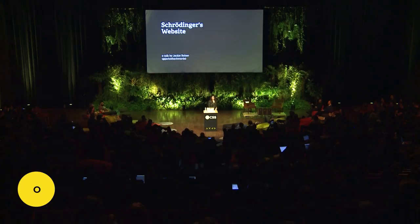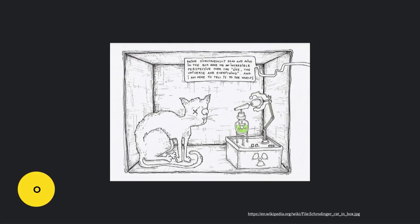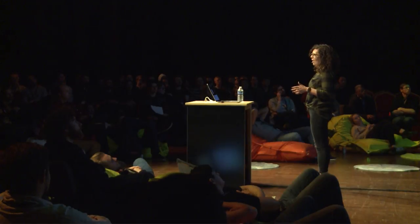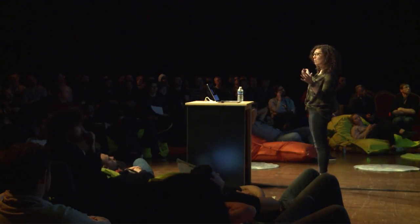Today I'm going to be talking about Schrödinger's website. If you're not familiar with the concept of Schrödinger's cat, it basically says if you put a cat inside a completely enclosed box with some poison that's going to be released in an indeterminate amount of time, you cannot possibly know if the cat is dead or alive or both at the same time without being able to observe the cat.